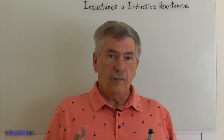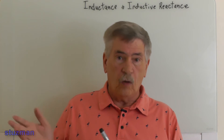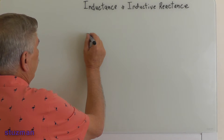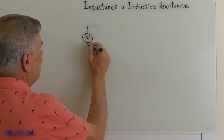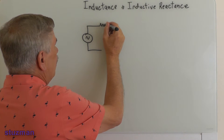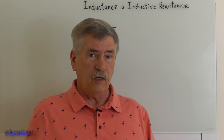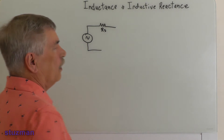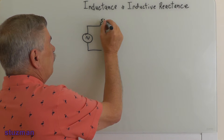Before we do the experiment, we've got to do a little bit of a whiteboard here to understand what we're going to be doing. So let's start off with a generator — it's going to be putting out an AC sine wave, a function generator. This generator, like most of them, has an internal output impedance, and this one is 50 ohms, which is pretty typical. We're going to call that our source resistor, and we're going to say it is 50 ohms.